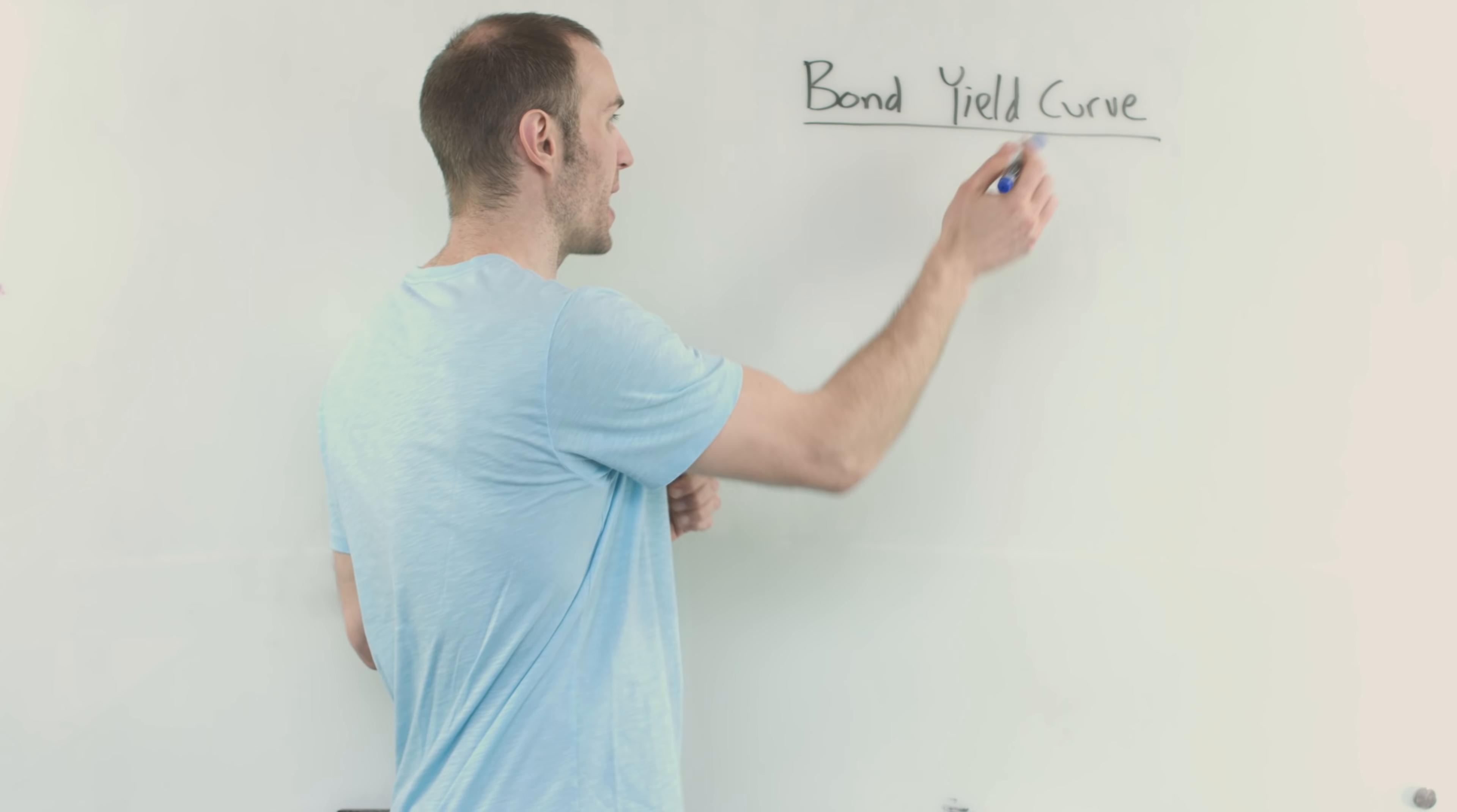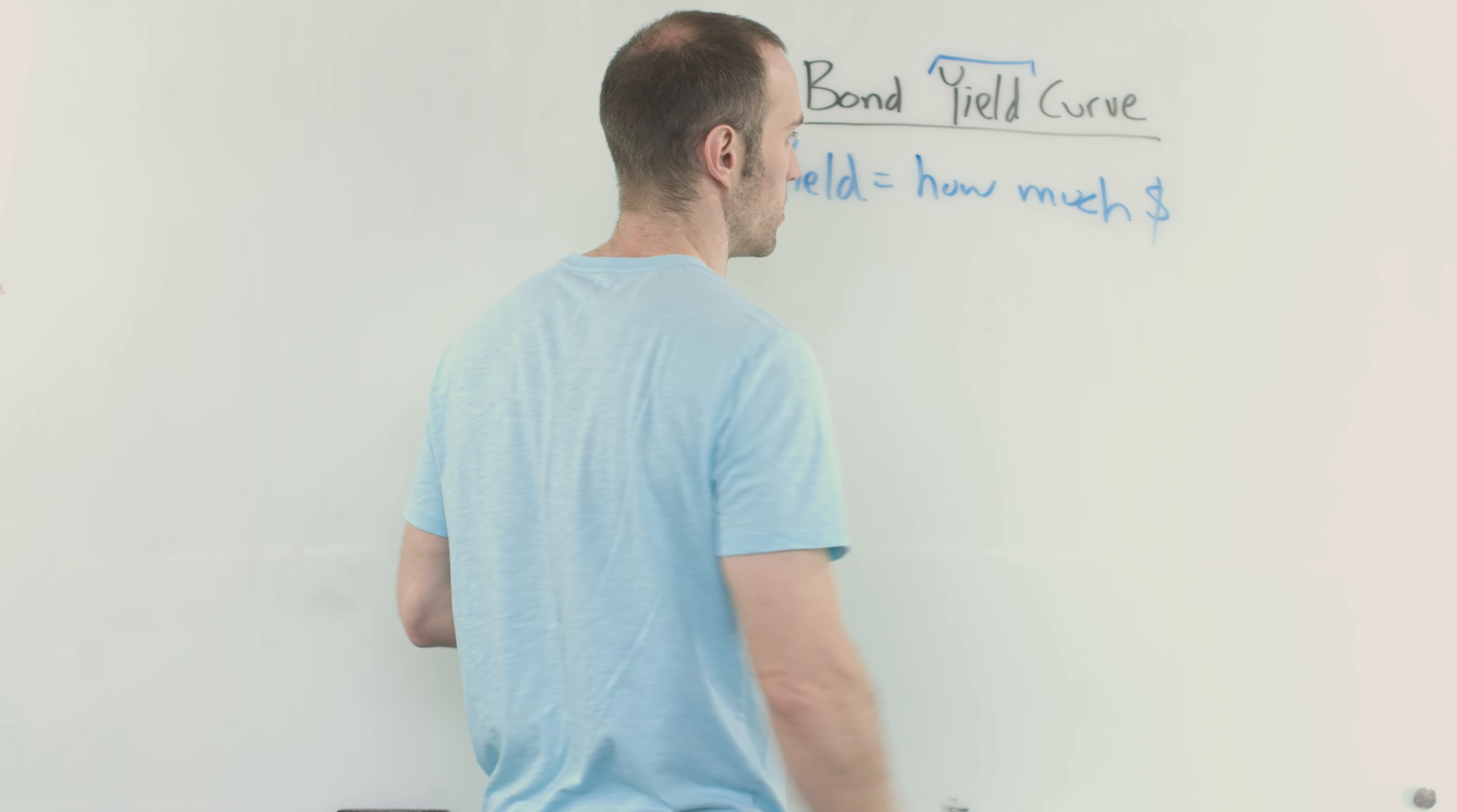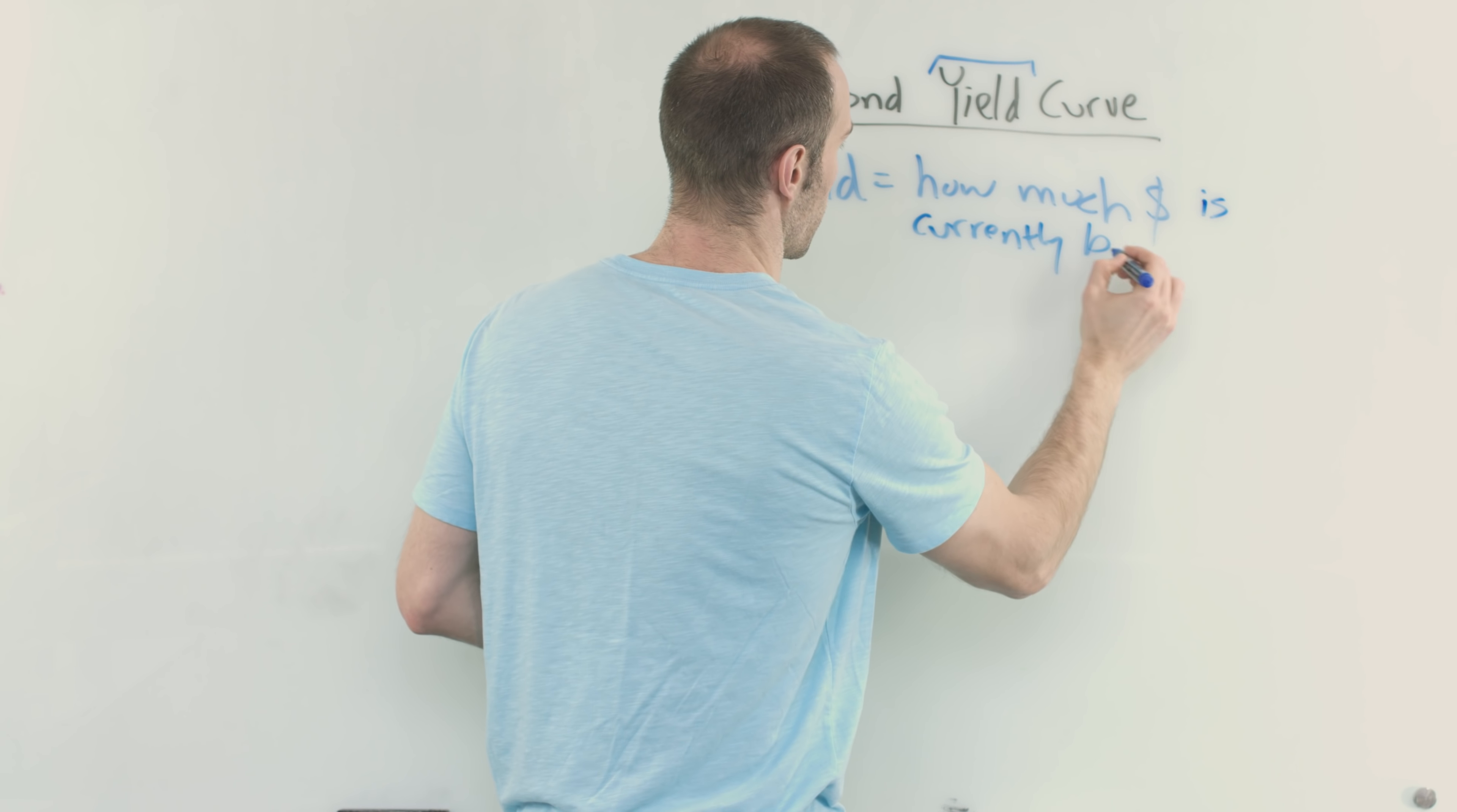So first off, bond yield curve. I want to focus on this word real quick. What does yield actually mean in the world of bonds? The yield is just simply how much cheddar, how much money - it's not actual cheese, don't worry about it - how much money is currently being paid?